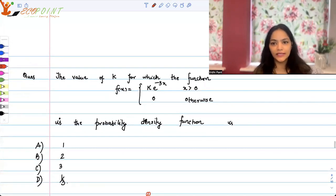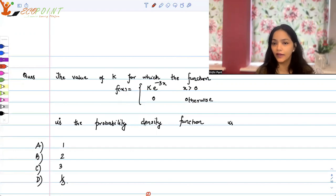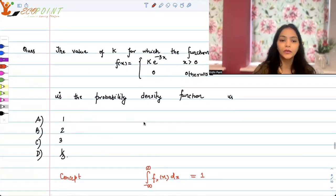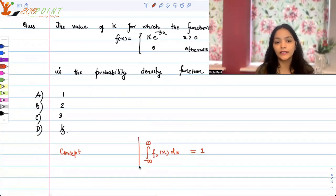The next question to be discussed is: the value of k for which the function f(x) = k e^(-3x) where x is greater than 0 and 0 otherwise, is the probability density function. Is it 1, 2, 3, or 1/3? The concept we will be using here is that the total probability in the entire domain should be equal to 1.